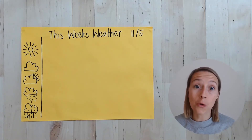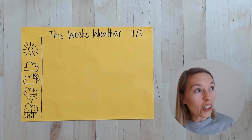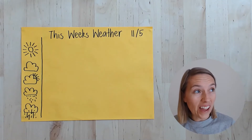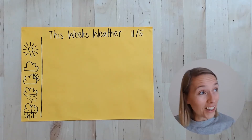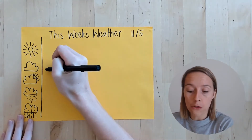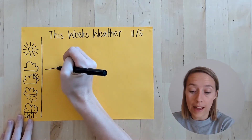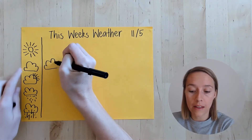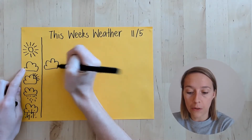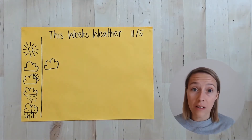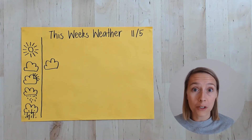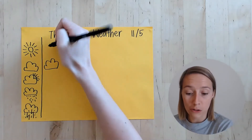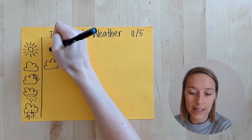Now it's time to record our data onto our graph. So if I look out the window today it's a little bit cloudy, so I'm going to draw my clouds over here next to the cloudy symbol. Then let's say I wake up tomorrow and it's going to be sunny, so I'll draw a sun next to the sun.